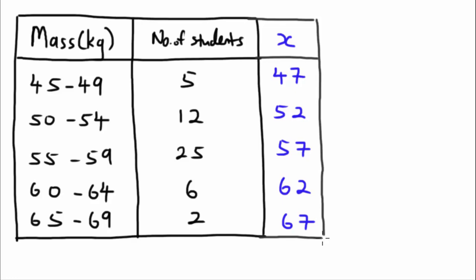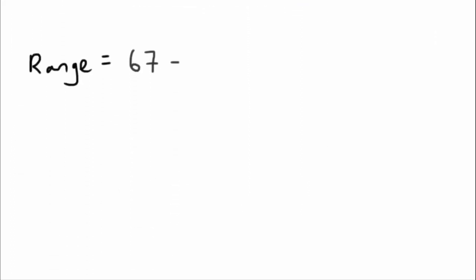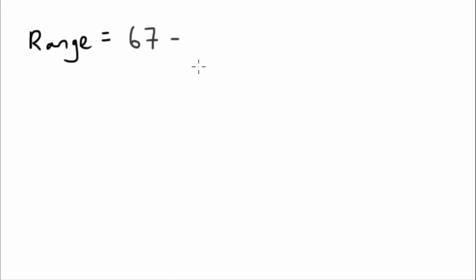The range equals the midpoint of the highest class minus the midpoint of the lowest class. The highest class midpoint is 67 and the lowest is 47, so 67 minus 47 gives a range of 20. The range is quite straightforward.